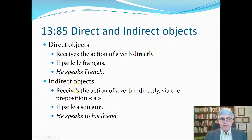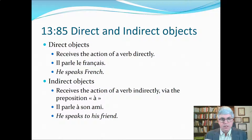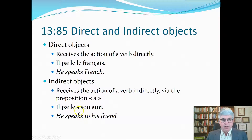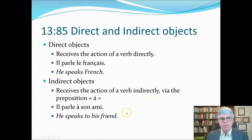Indirect objects receive the action of the verb indirectly — in English through the preposition 'to,' and in French through the preposition 'à.' So 'il parle à son ami' means 'he speaks to his friend.' His friend is separated from 'speaks' by the word 'to' and by 'à.' So this is a direct object with no preposition, and an indirect object separated by the preposition 'à' or 'to.'